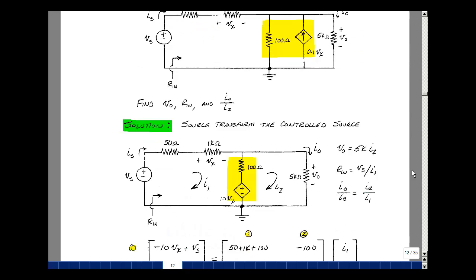I'll take these two and do a source transformation. So I have a series resistance and a series voltage source, whose value is 100 times 0.1 V sub X, so 10 V sub X. The current that flows in this resistance is not the same as this one. It creates the same effect outside the yellow box, but inside it's quite different. Let's assign mesh currents I1 and I2.